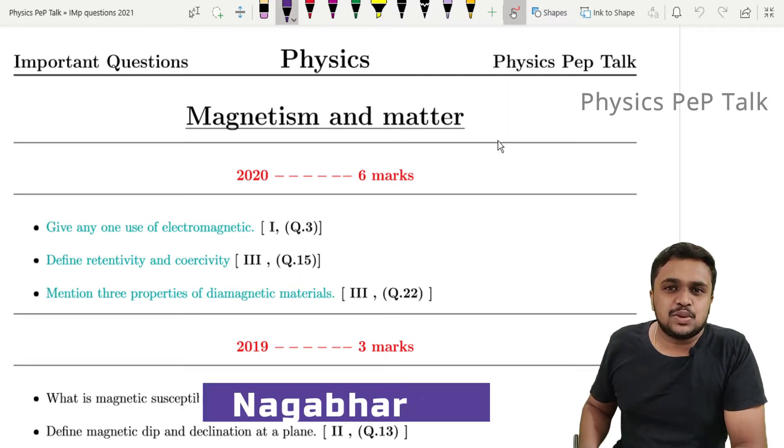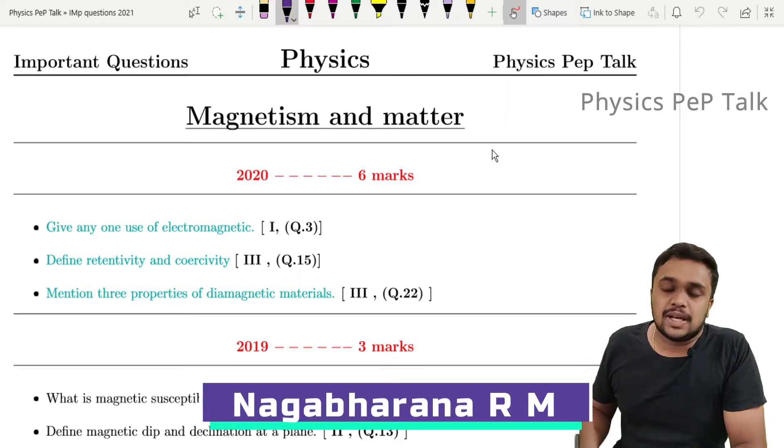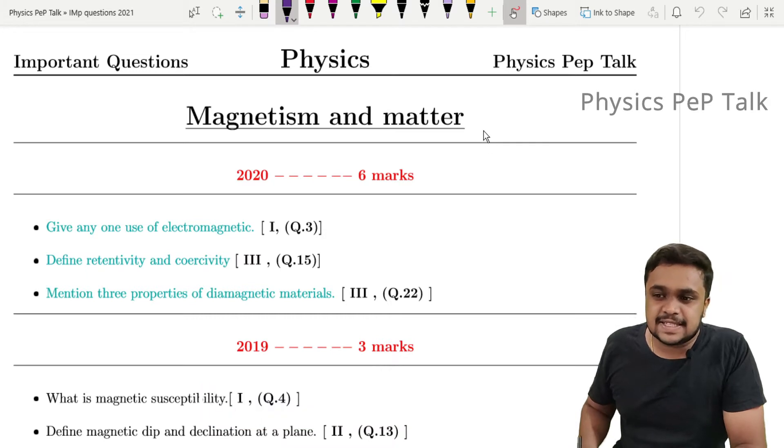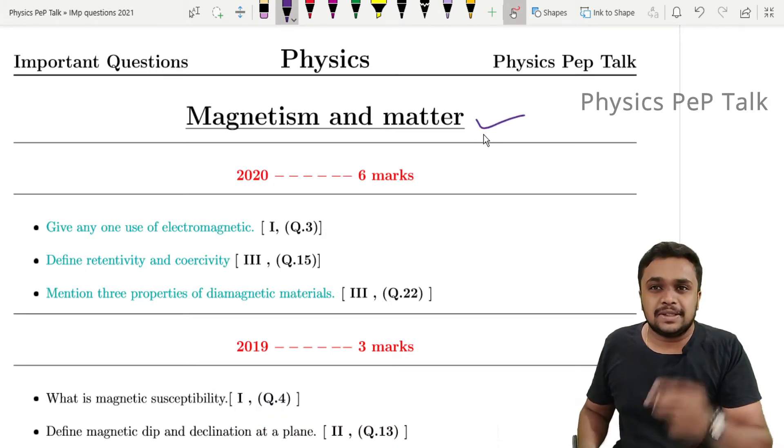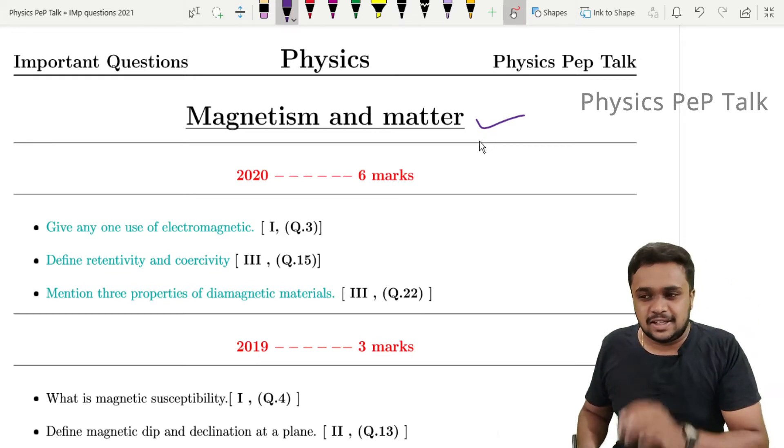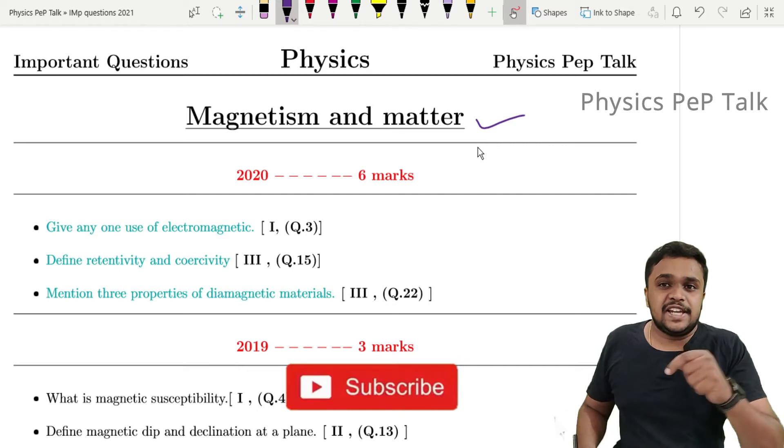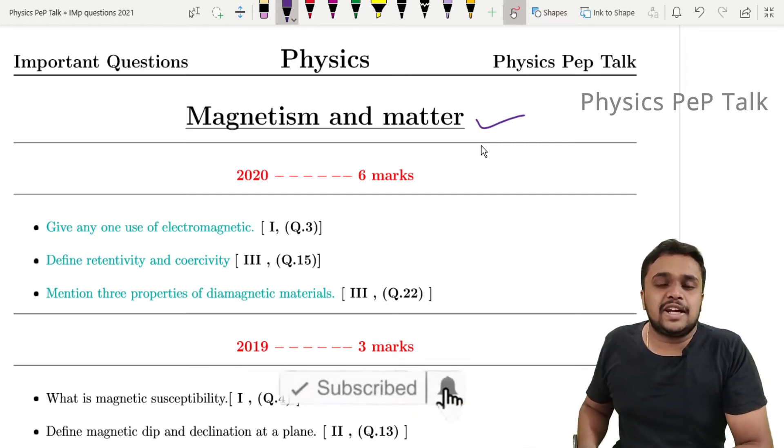Hello students, welcome to Physics Pep Talk. In this video, we'll discuss Chapter 5: Magnetism and Matter. We'll cover previous three years' question papers, model papers, and must-read topics. There are many deleted portions in this chapter that previously had easy questions.